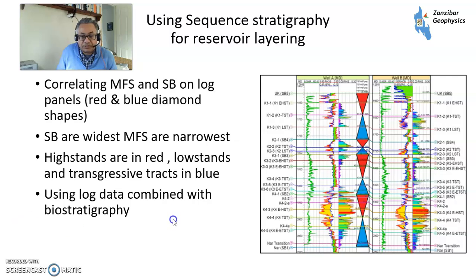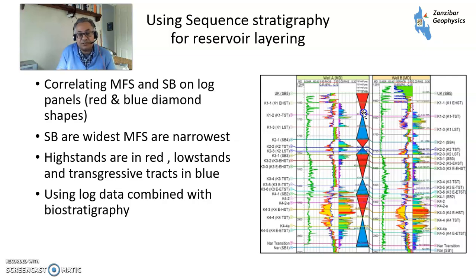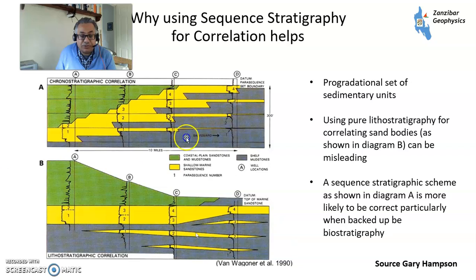Looking at what it looks like on logs, you can use this for correlation — correlating different units. Your red and blue diamond shapes: sequence boundaries are where units are at their widest, and it narrows at the maximum flooding surface. The maximum flooding surface is sometimes associated with biozones — for example, the Kimmeridge maximum flooding surface in the Jurassic of the North Sea. You can see where these things are and use that to correlate individual units.